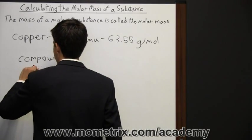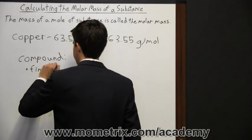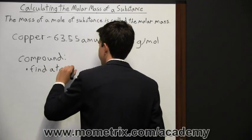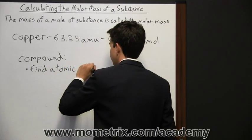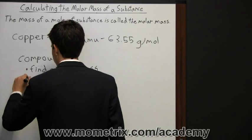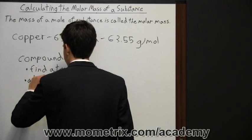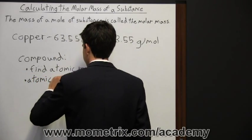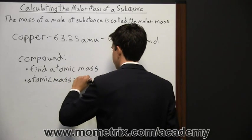First, find the atomic mass of an atom. So you're going to start with one atom at a time. So after you've found the atomic mass, multiply the atomic mass by the subscript.